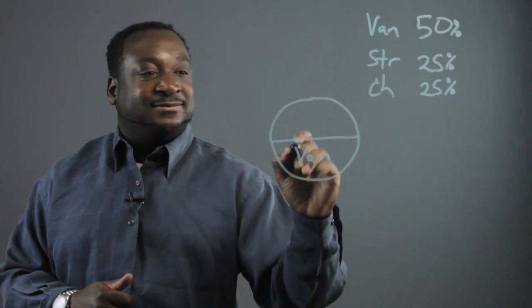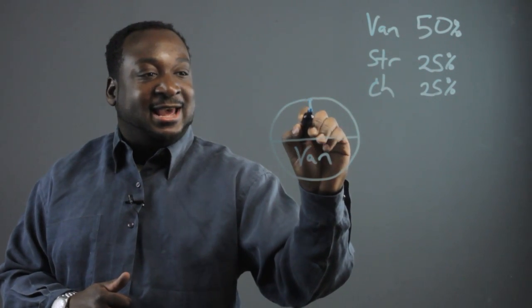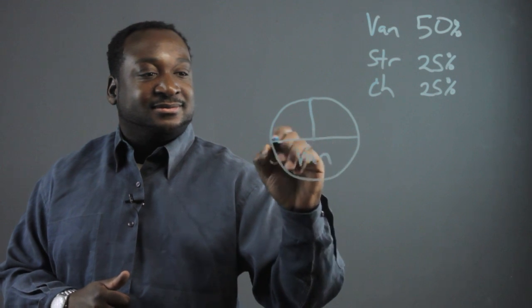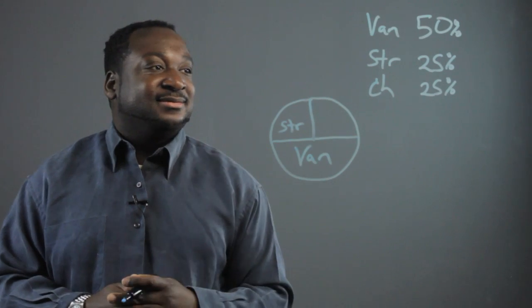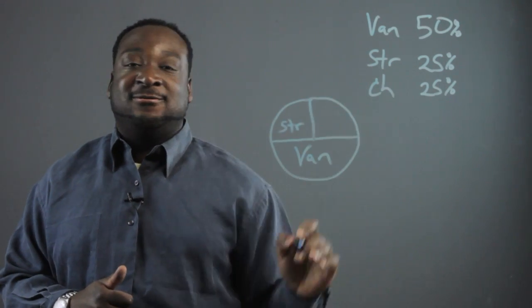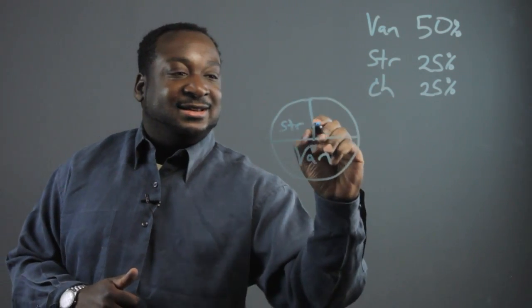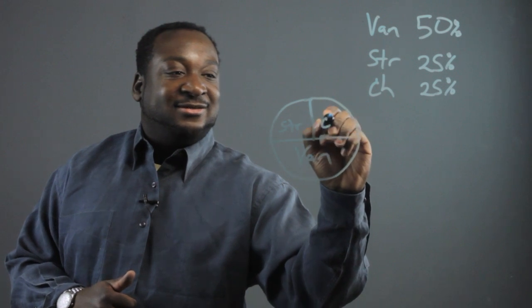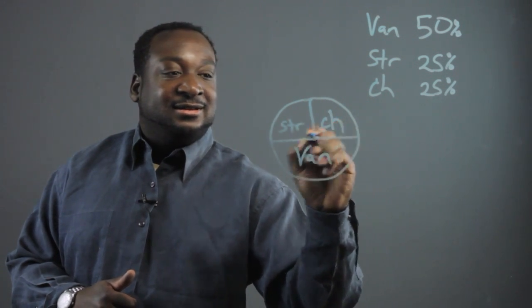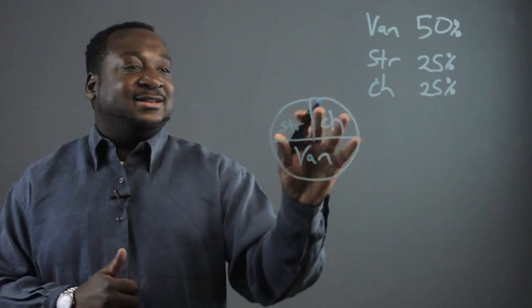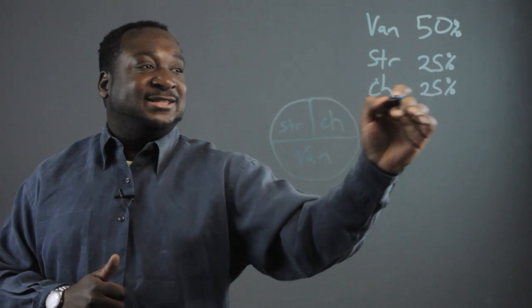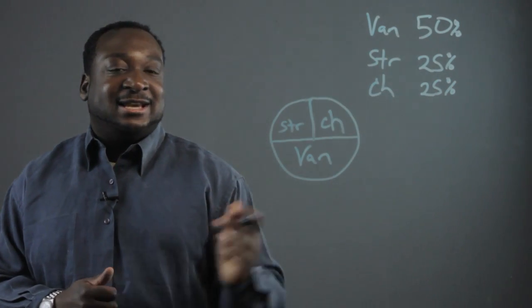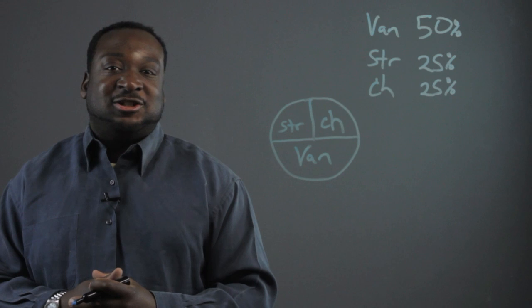Chocolate is also equal to 25%, and here you have your chocolate. Now here's your circle graph representation of this data, and that's how you teach circle graphs to children.